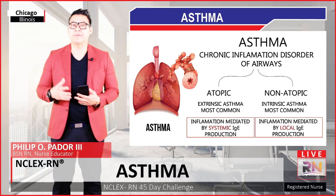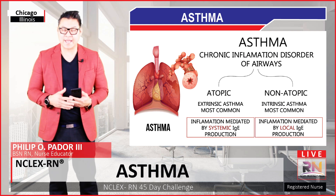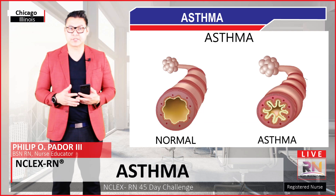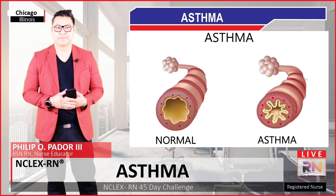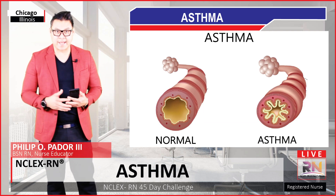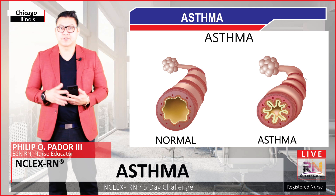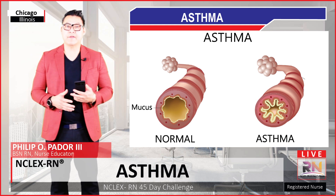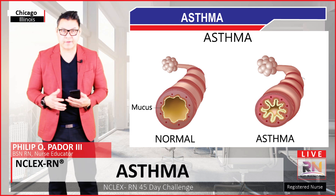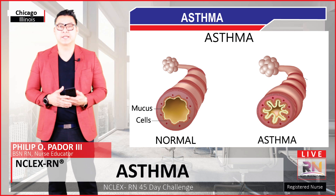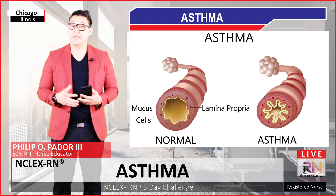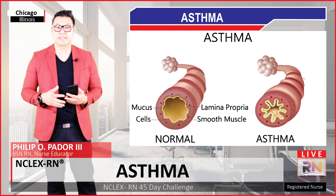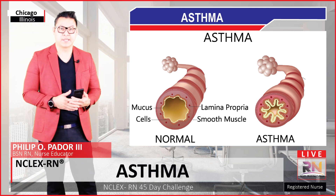The inflammation is mediated by local IgE production. So let us look at the cross-section of the normal lung — the bronchus of a normal lung. Here we have the mucous layer, the pseudostratified epithelial cells, the lamina propria, and the smooth muscle cells surrounding all this.